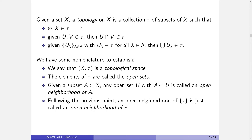Something we frequently use with open sets is the idea of a neighborhood. Given a subset of X, an open set that contains it is called an open neighborhood. An open neighborhood of a singleton is referred to as an open neighborhood of x — technically it should have curly braces around it, but that looks dumb and nobody does that. Before we go further, it's worth noting historically who cooked this up. Topologies were first defined by a mathematician named Felix Hausdorff. We will talk about Hausdorff a lot because he literally created topologies.